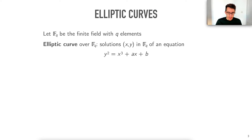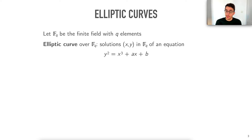First, elliptic curves. I'm going to fix a finite field fq for the rest of the talk. fq is just the finite field with q elements. An elliptic curve over this finite field fq is the set of all solutions xy of an equation of the form y² = x³ + ax + b, where a and b are parameters that define the elliptic curve.